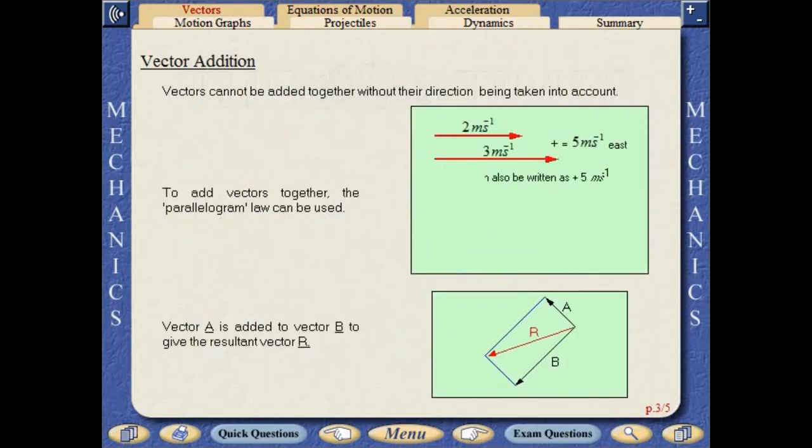Vectors cannot be added together without their direction being taken into account. To add vectors together, the parallelogram law can be used. In the diagram, vector A is added to vector B to give the resultant vector R.